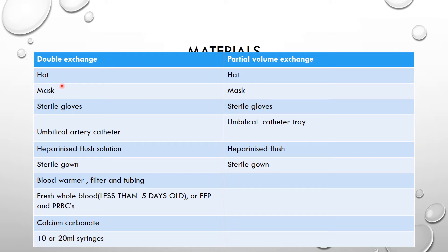The materials needed for double volume exchange transfusion include a hat for the baby, a mask for the person performing the procedure, sterile gloves, an umbilical artery or umbilical vein catheter, heparinized flush solution, a sterile gown, a blood warmer with filter and tubing, fresh whole blood — in Zimbabwe we use blood less than five days old — or fresh frozen plasma with packed red blood cells, calcium gluconate, and 10 or 20 mL syringes.